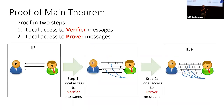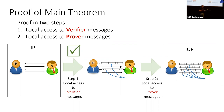We wanted to go from an IP to an IOP in two steps. First we got local access to the verifier messages while still reading the entire prover messages. Now we take this intermediate object and turn it into a full-fledged IOP.